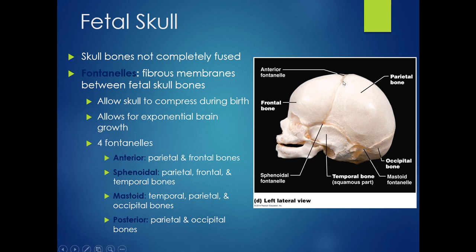There are four fontanelles: the anterior fontanelle at the top, which is the baby's soft spot and the very last fontanelle to close, connecting the parietal and frontal bones; the sphenoidal fontanelle between the parietal, frontal, and temporal bones; the mastoid fontanelle between the temporal, parietal, and occipital bones; and the posterior fontanelle towards the back between the parietal and occipital bones. Please do be careful with the fetal skull in the lab as it is quite fragile.